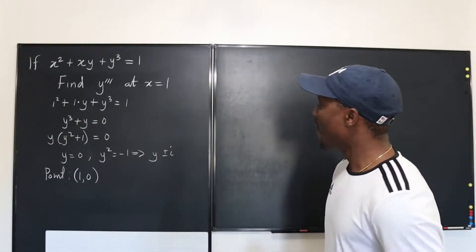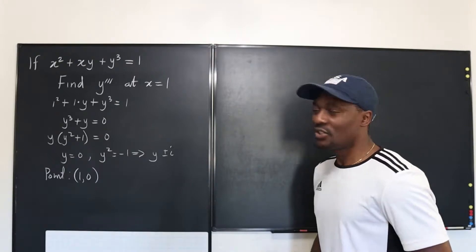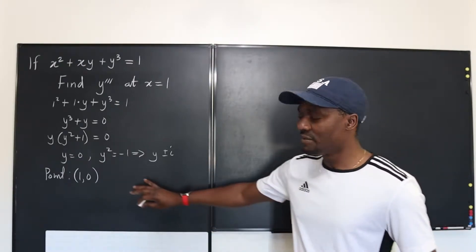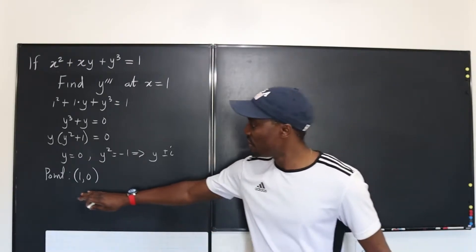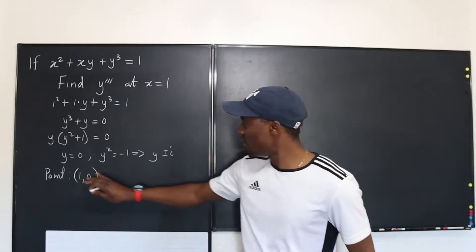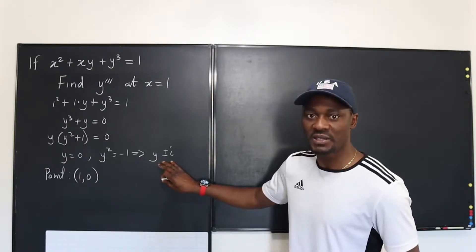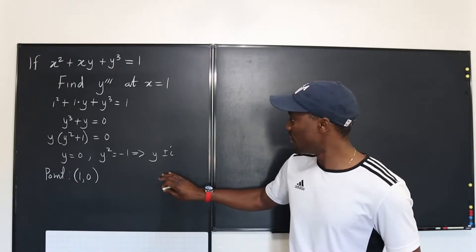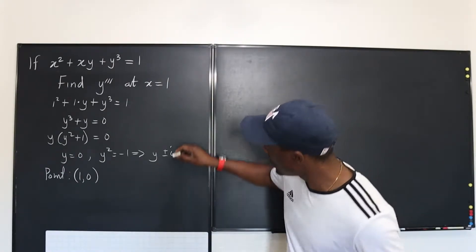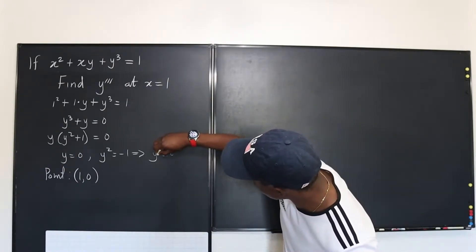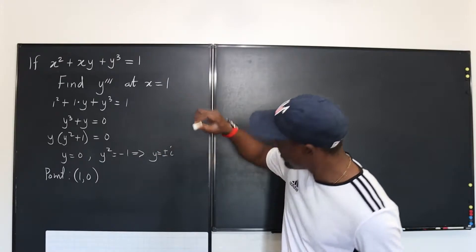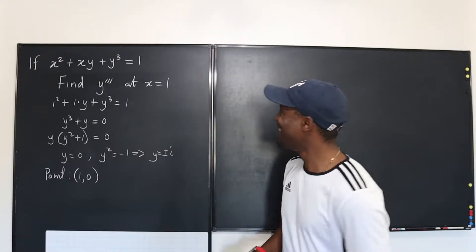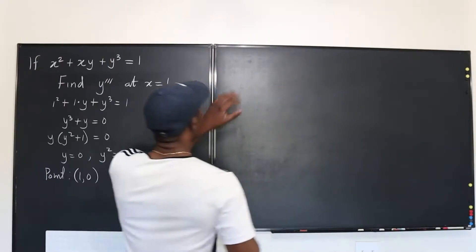Now let's start our differentiation. We haven't differentiated yet — we just secured the point. We dismiss the imaginary solution because y equals ±i is not real. Now let's go and start our differentiation.